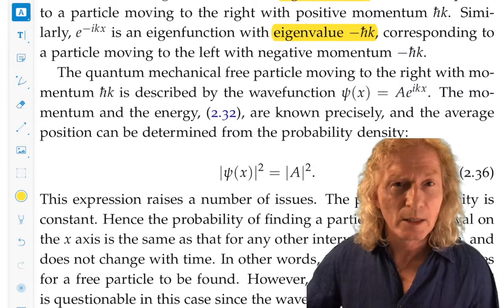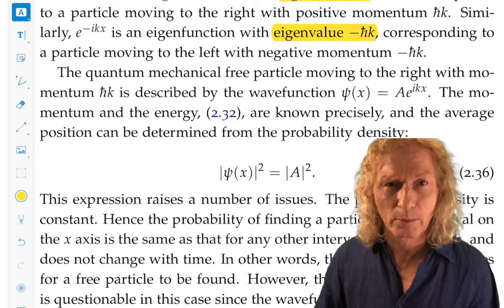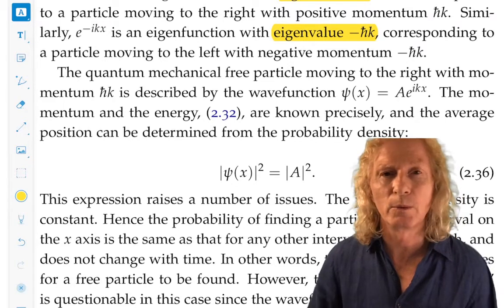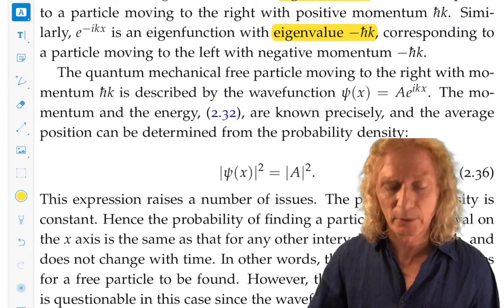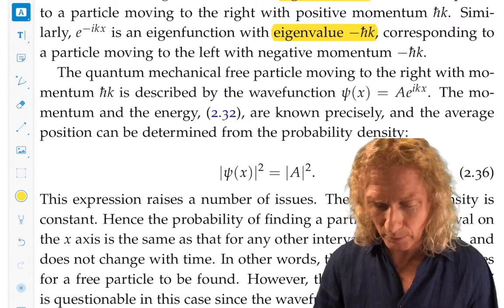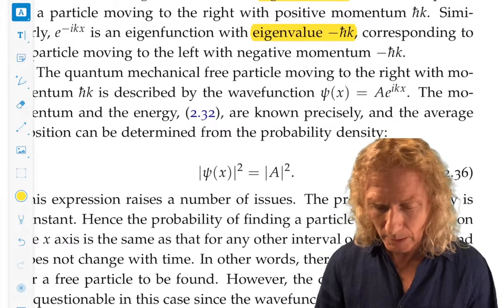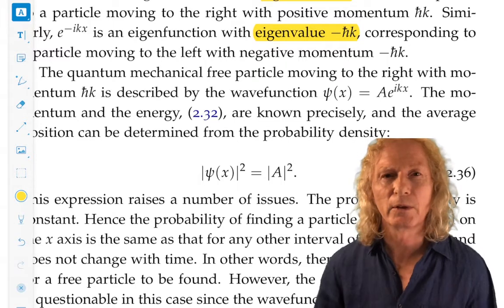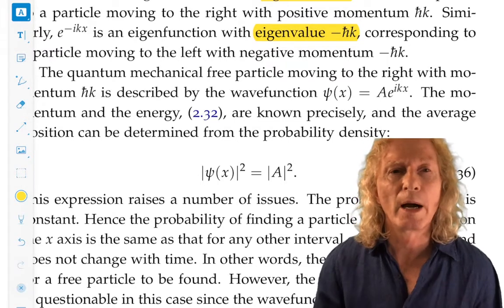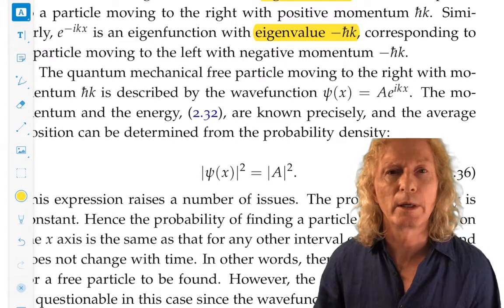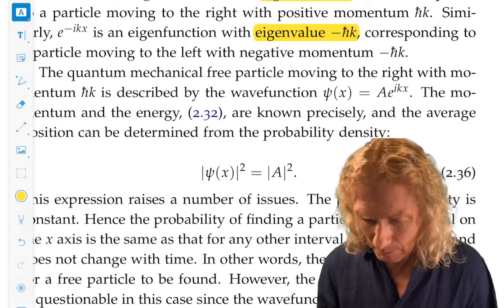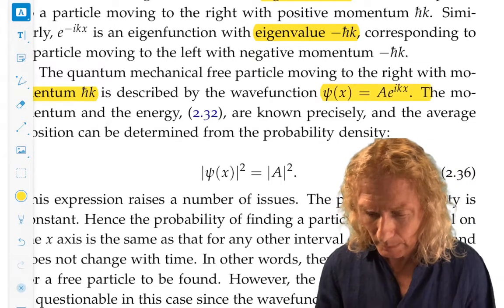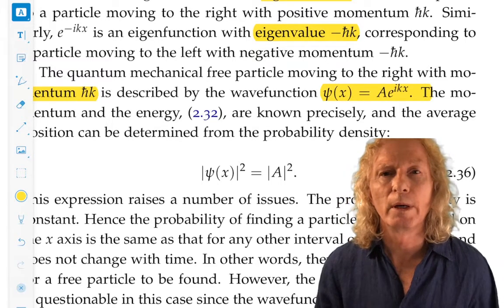Now, we've only solved the time independent Schrödinger equation. We can easily put in time dependence. We know what it is, and we saw how to do that from the last lecture, but let's just move on with this for the moment. The quantum mechanical free particle moving to the right with momentum h-bar k is described by this wavefunction.